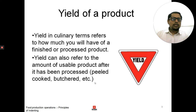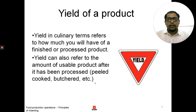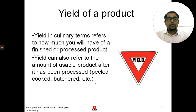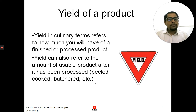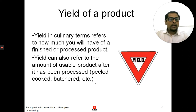When we talk about the yield of a product, yield in culinary terms refers to how much you will have of a finished or processed product. A yield can also be referred to as the amount of usable product after it has been processed — whether by peeling, cooking, butchering, or discarding parts of the food product that are not meant to be eaten.